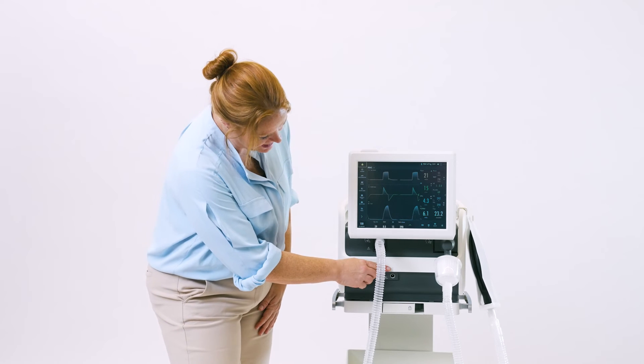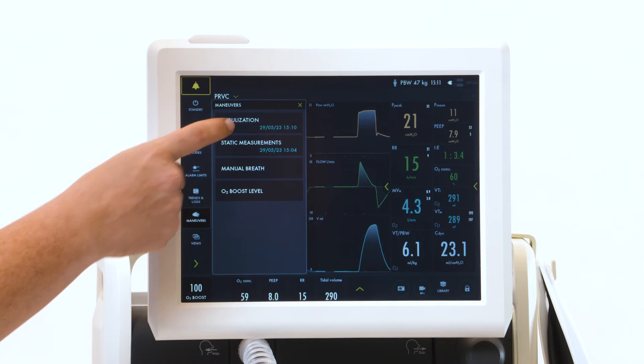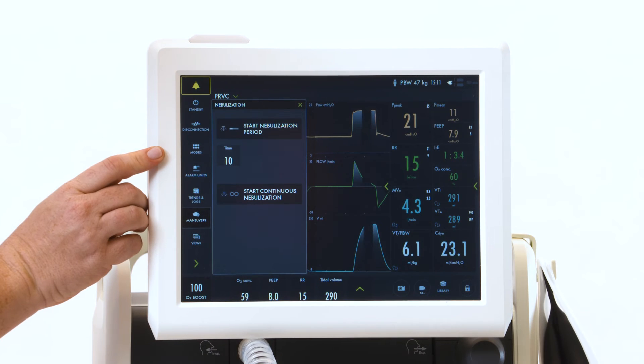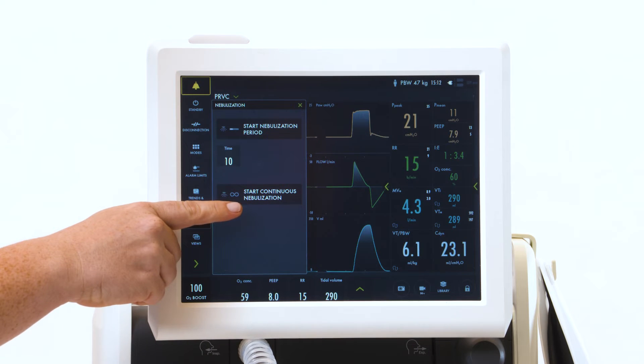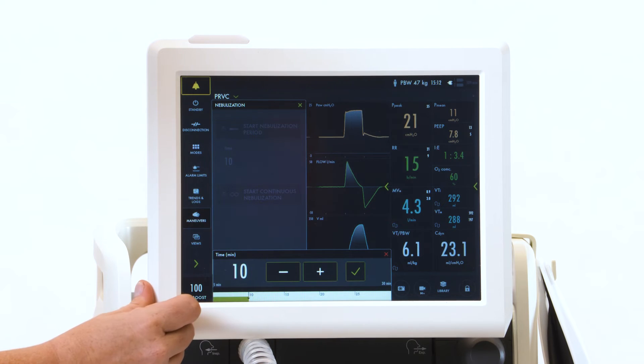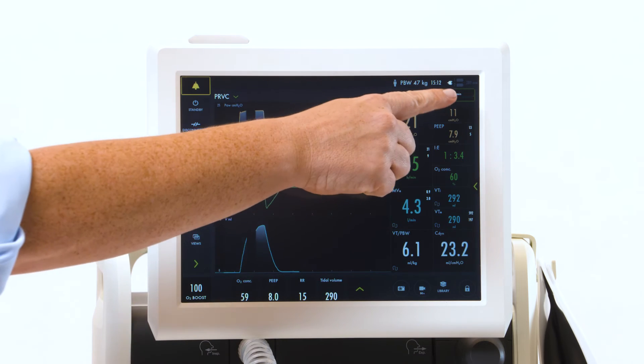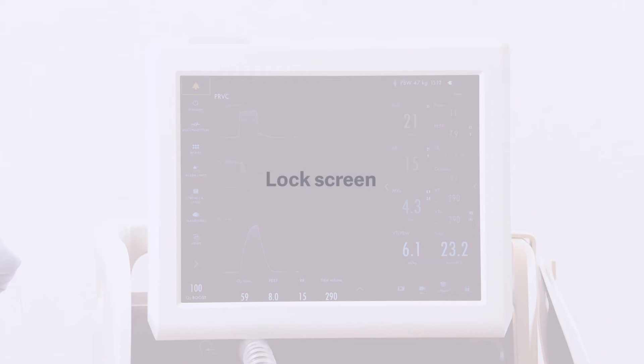Aerogen Technology is built into every single ventilator and is connected at the bottom. Select the maneuvers tab and go to nebulization. You can run it continuously or intermittently, choosing between 5 and 30 minutes. Check mark and hit accept and you'll see the nebulization appear.